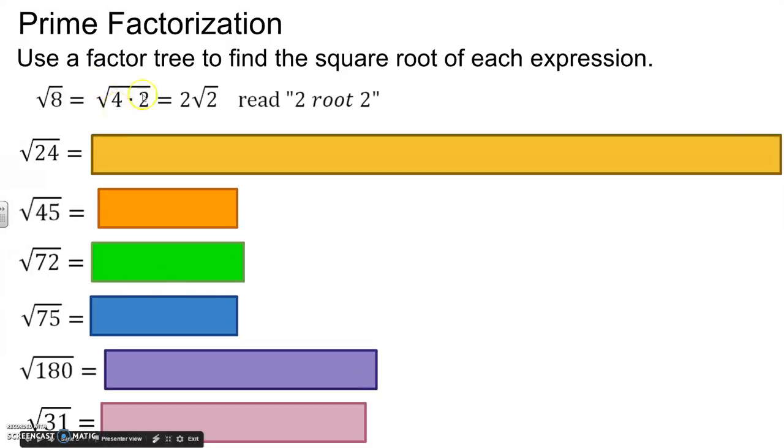The square root of 4 is 2. So 2 gets to come out of the house, but there's one more 2 left. So it stays. So the final outcome would be 2 root 2. If I look at this as the factor tree, I took 8 and I broke it down and then I circled.